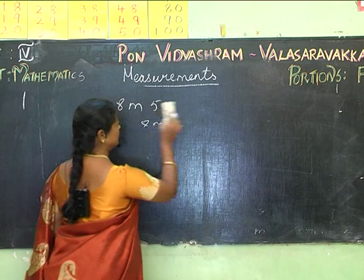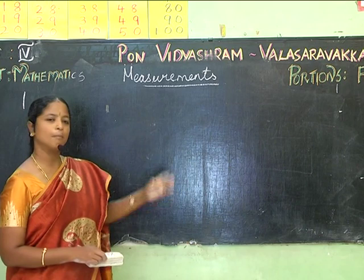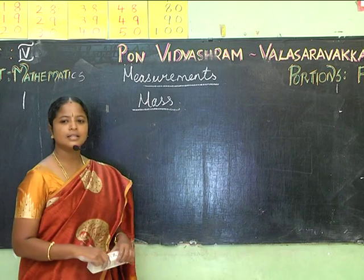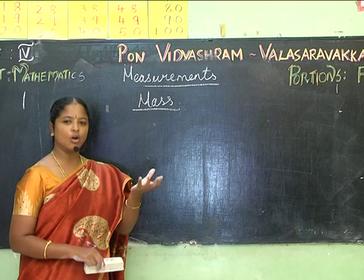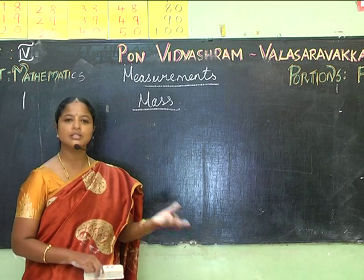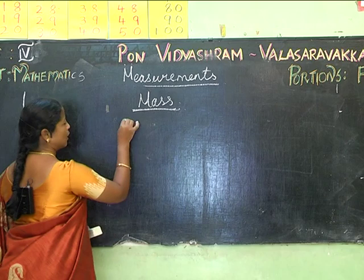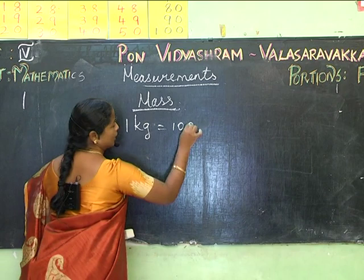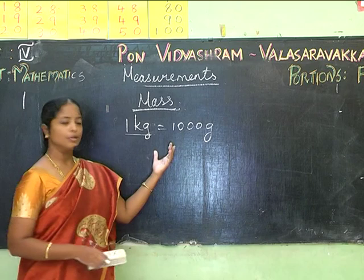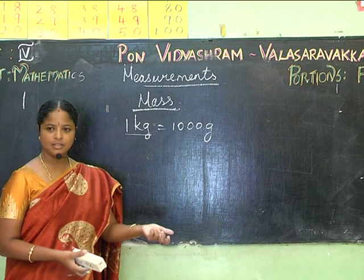Now we shall see what is mass. Mass is the weight of solid objects. We measure solid objects using the units kilograms (kg) or grams. When we go to the market, we buy vegetables in kgs. But if we are buying gold or any ornaments, we buy in grams, not kgs.